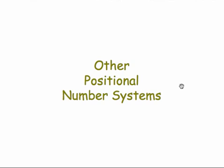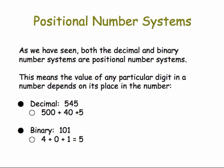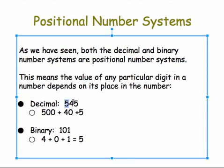Let's talk about some other positional number systems. To review, both decimal and binary number systems are positional number systems, which means that the value of any digit inside a number depends on its place in the number. So the first 5 in 545 represents 500, the second 5 represents 5. Similarly, in binary, the first 1 represents 4 and the second 1 represents 1.